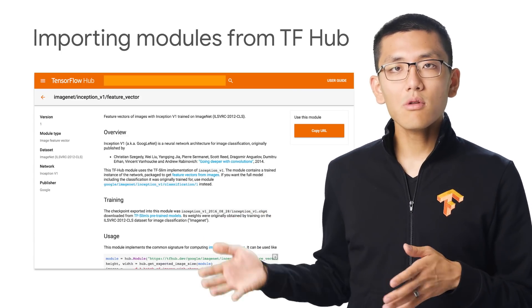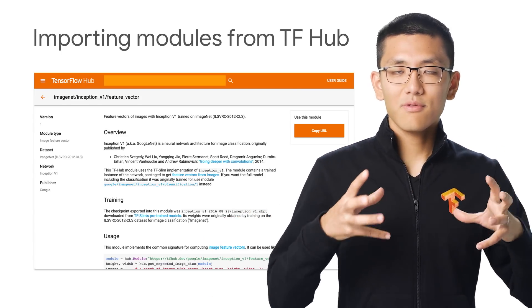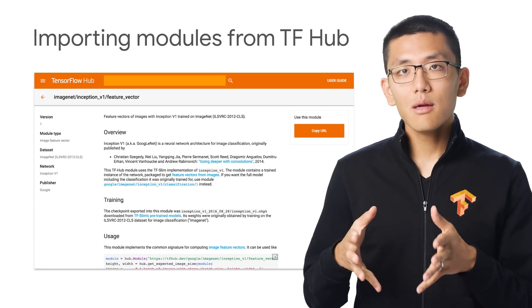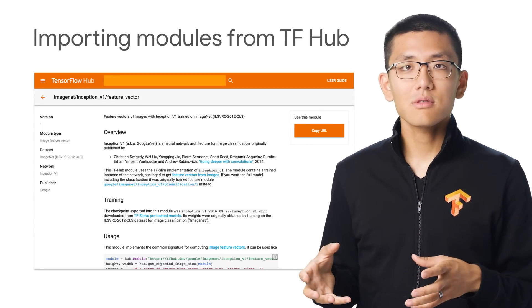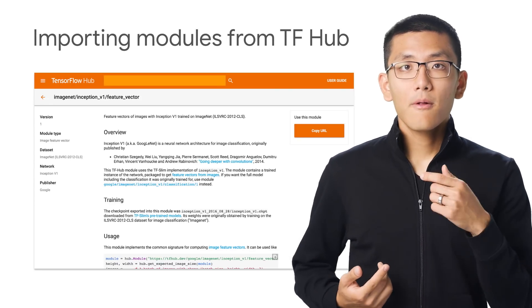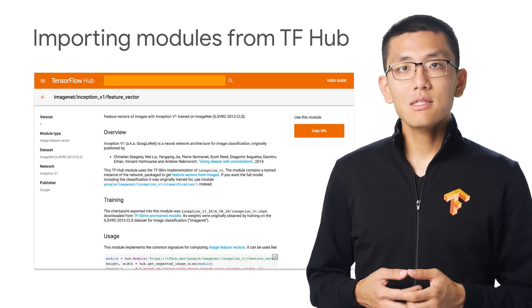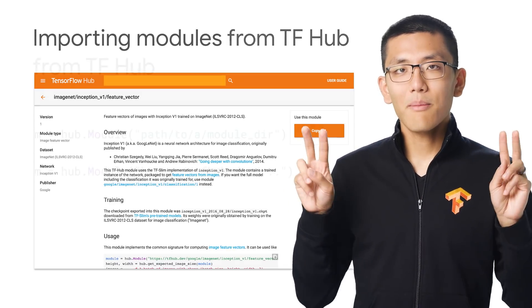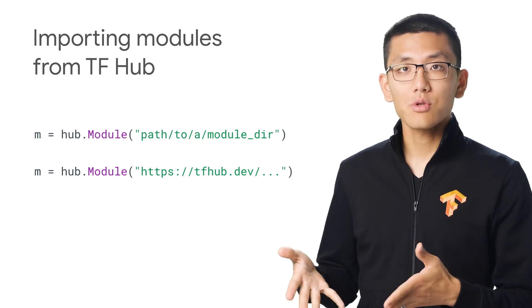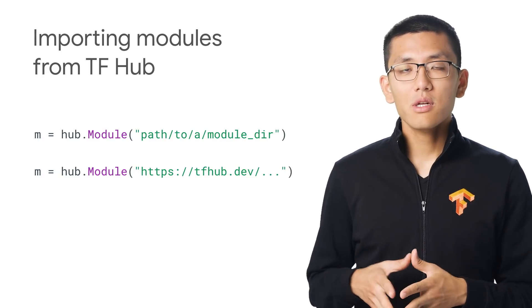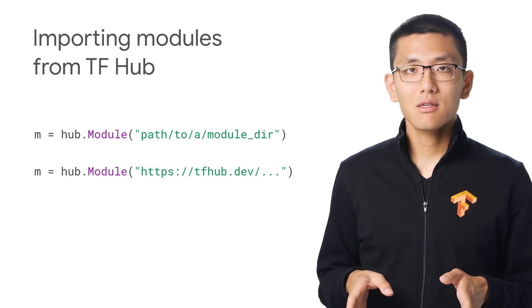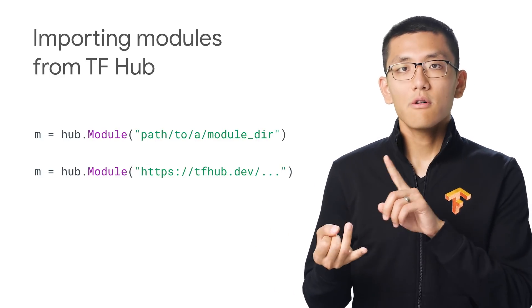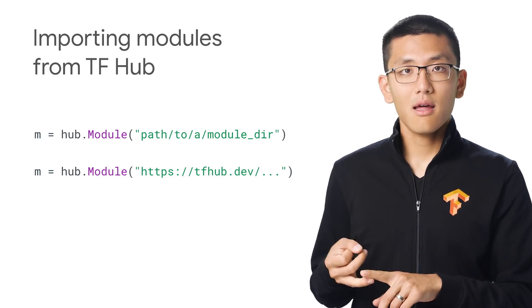Because TF Hub is integrated with TensorFlow, you end up pulling in sections of a TensorFlow graph. And so the library makes it super easy to load up these models to be fine-tuned. The resources in TF Hub are known as modules. A module is imported into a TensorFlow program by creating a module object from a string with its either URL or file system path, as shown.